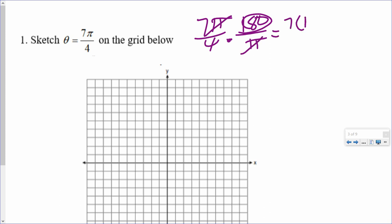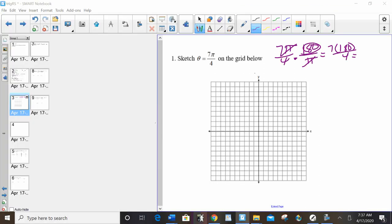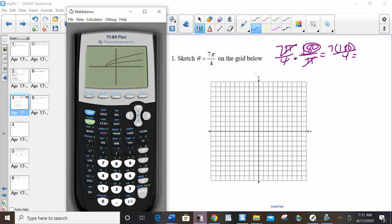My pis cancel. I'm left with 7 times 180 over 4. I can go to my calculator, 7 times 180 over 4. Let's use my alpha y equals enter, because I like that.